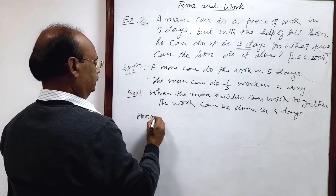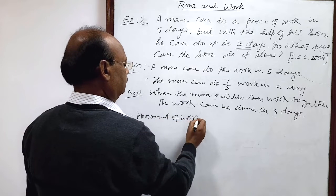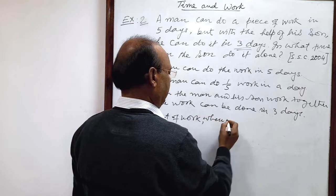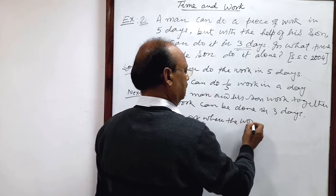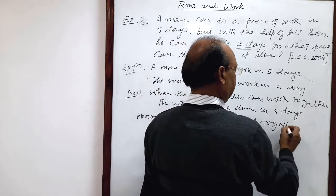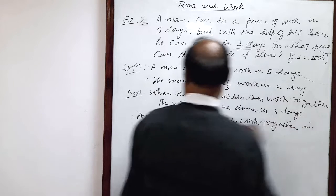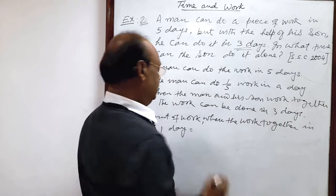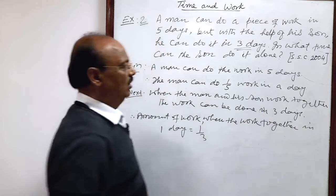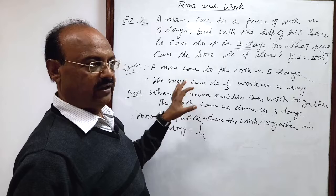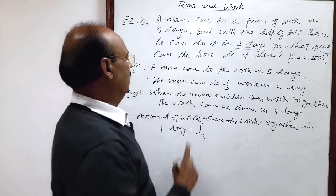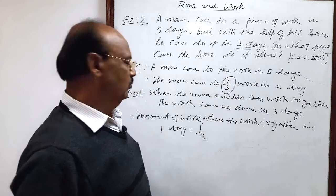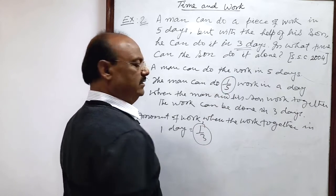Therefore, amount of work when they work together in one day, how much? Reciprocal of this. One by three. So when the man is working alone, amount of work done in one day is one by five. And when both work together, amount of work done is one by three.